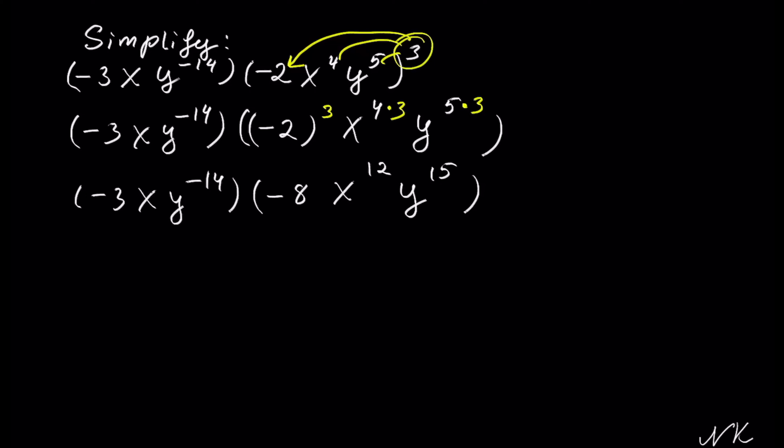First, I'm going to rearrange the factors so that the same bases are next to each other. We have negative 3 times negative 8, x times x to the 12, y to the negative 14 times y to the 15.